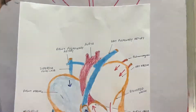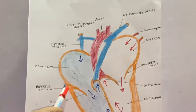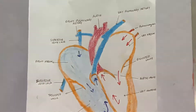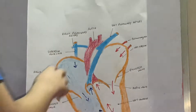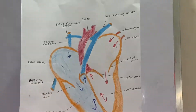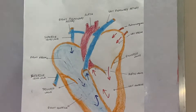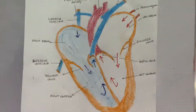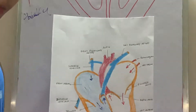This is the superior vena cava and this is the inferior vena cava. The superior vena cava and the inferior vena cava — the inferior vena cava collects the blood from the bottom half of our body.